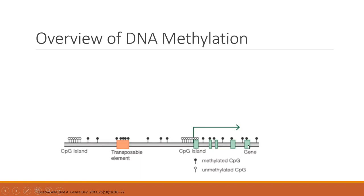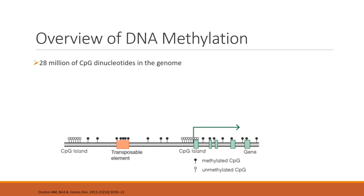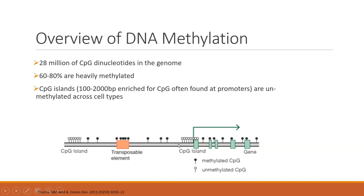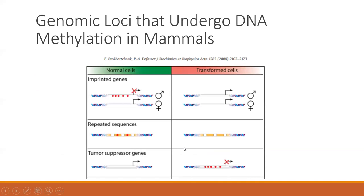The distribution of DNA methylation across the genome is important. High-density CpG sites clustered together are called CpG islands, and they tend to be unmethylated when present at promoter regions. There are also isolated CpGs across the genome, and highly methylated CpGs overlapping transposable elements. In total, there are 28 million CpG dinucleotides in the genome, mostly heavily methylated, while CpG islands at promoter regions are usually unmethylated.